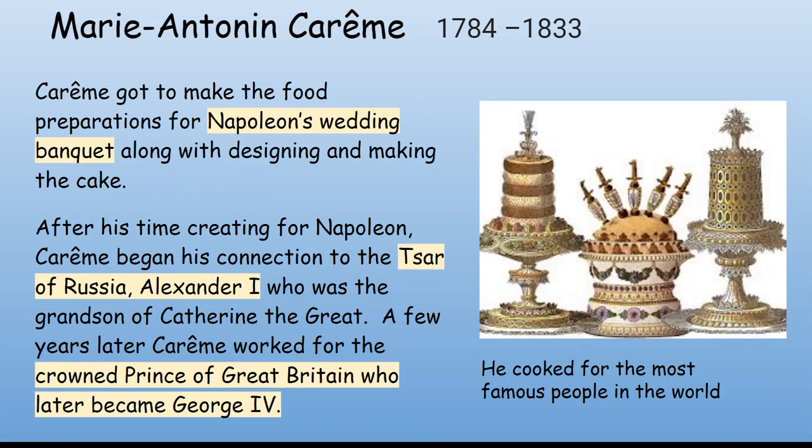Carême prepared the food for Emperor Napoleon's wedding banquet and designed and made the wedding cake. He also cooked for Tsar Alexander I of Russia and then worked for the King of England — he cooked for the most famous people in the world.